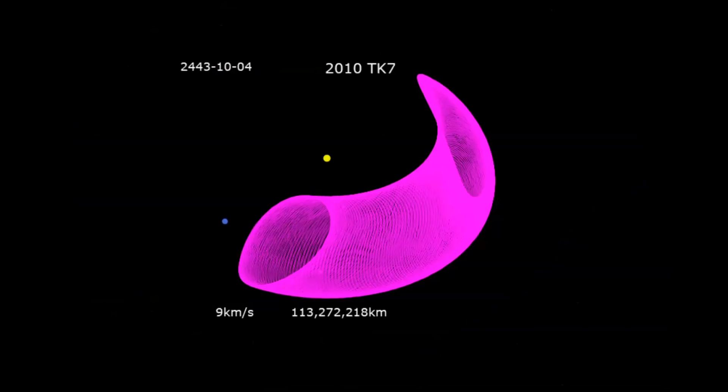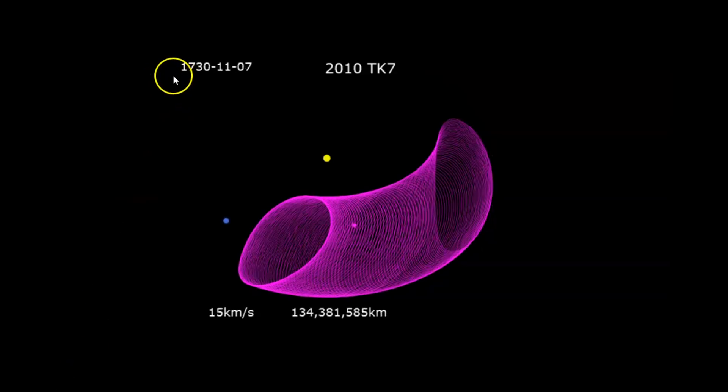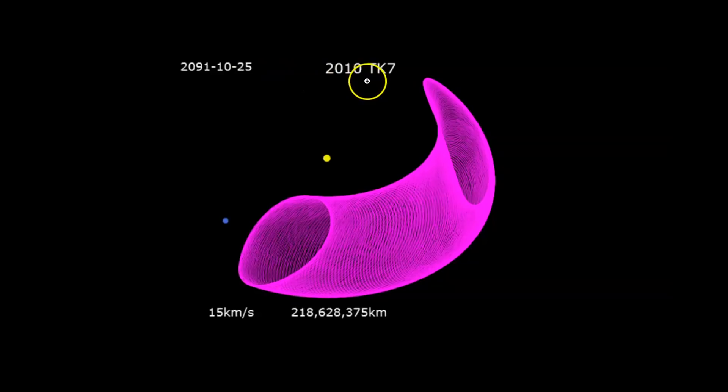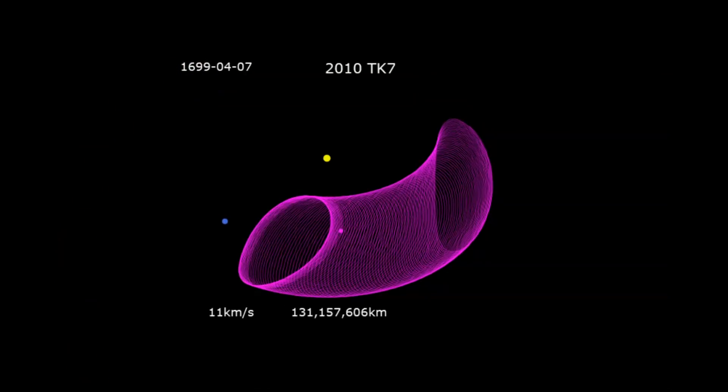They also have on here another GIF image of this asteroid and the dates. Evidently it's been floating around out there since going back to the 1600s, but it was only recent, 2010 is the date, that's when it was probably discovered. And it shows its osculating movement going all the way up to 2024.